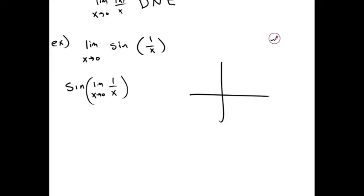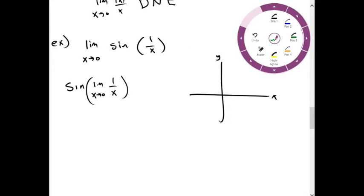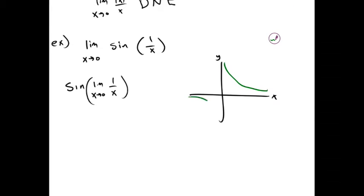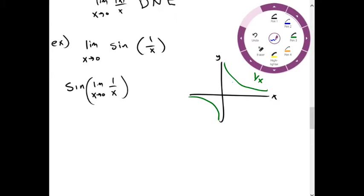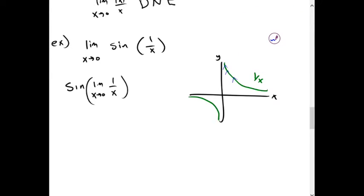If you look at this graphically, this is how 1 over x looks when graphed. Approaching from the right, we go to positive infinity. Approaching from the left, we go to negative infinity.